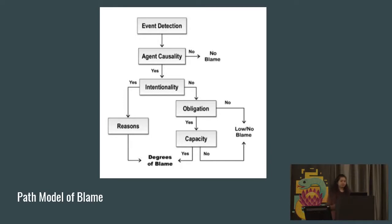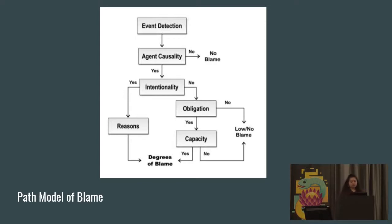Coming to propaganda — not all fake news is propaganda. But some fake news, once established as fake, can be processed further to determine whether it is propaganda or not. The model I chose here was the path model of blame. This is an existing model that has been used in psychology and literature. It is about how humans perceive blame through the way things are written and communicated.